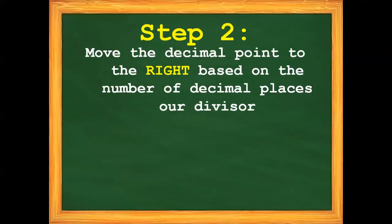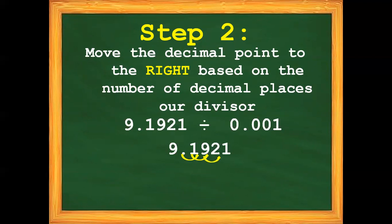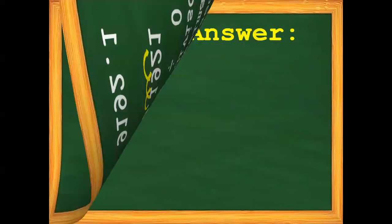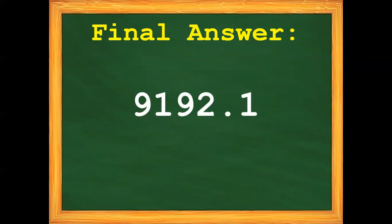We have three decimal places. Step number two: move the decimal point to the right based on the number of decimal places in our divisor. So for 9.1921 divided by 0.001, we need to move the decimal point three times — one, two, and three. So the final answer for our third example is 9,192 and one-tenth.